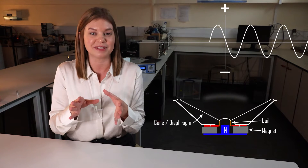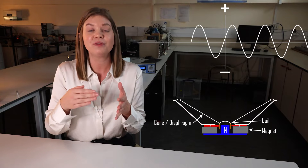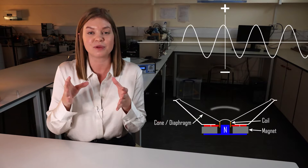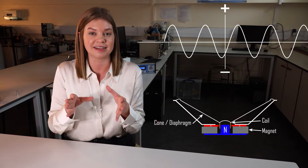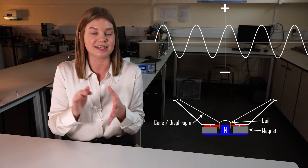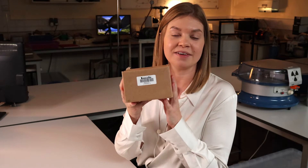This is where the diaphragm comes in. If we clamp a diaphragm to that movement, this increases the volume of air that's agitated to increase the sound signal. These are the principles we will use to make our own loudspeakers using this loudspeaker kit.